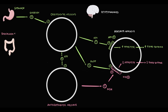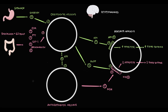In addition, the duodenum and, to a lesser extent, other GI tract regions produce cholecystokinin, peptide YY, glucagon-like peptide 1, and oxyntomodulin. All these substances inhibit the function of orexigenic neurons, which leads to a decrease in appetite.